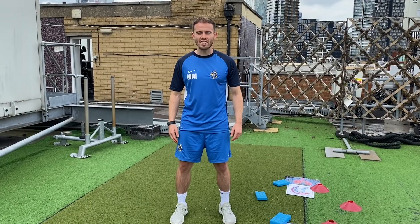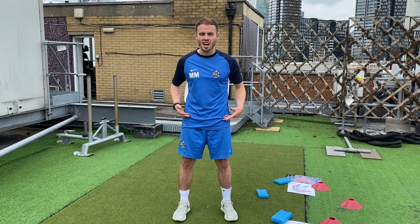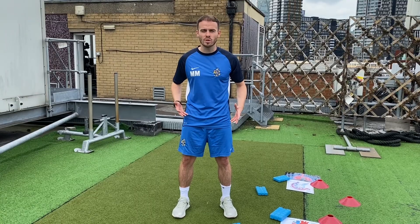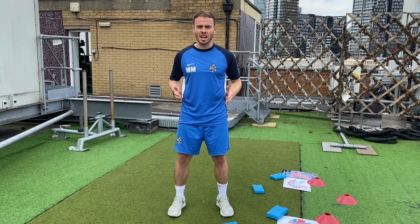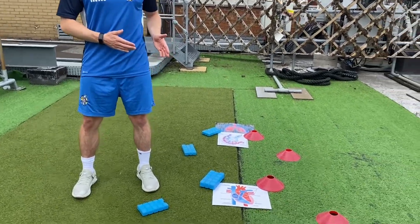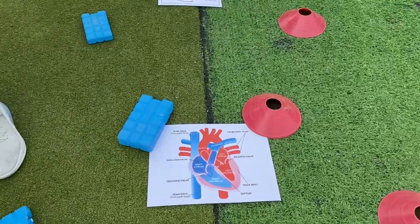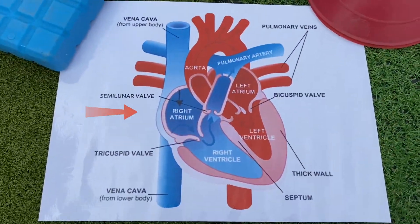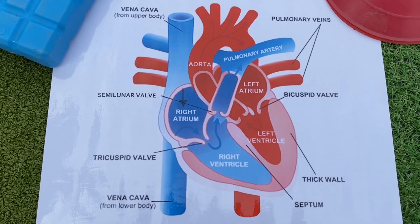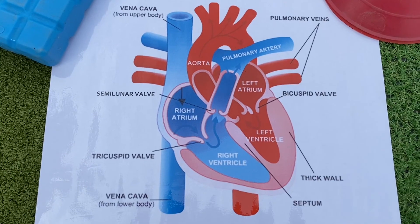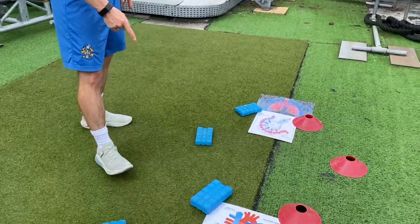Let's begin our journey in the right atrium. I'm dressed in blue because I am high in carbon dioxide — I'm representing deoxygenated blood. From the right atrium, blood passes through the tricuspid valve into the right ventricle, which is the chamber located at the bottom of the heart. As the blood leaves the right ventricle, it passes through the pulmonary artery, which takes deoxygenated blood away from the heart to the lungs.